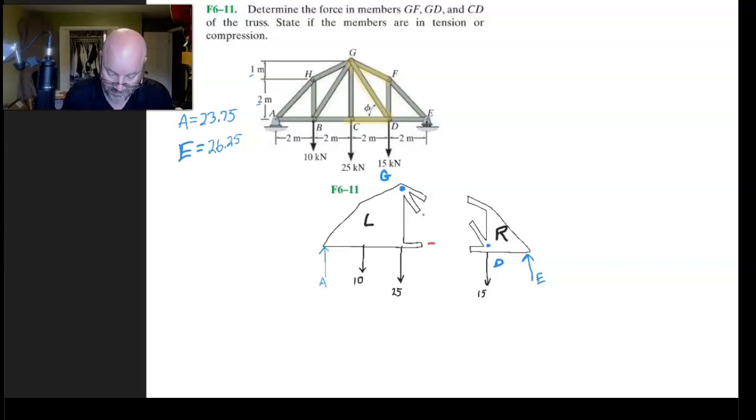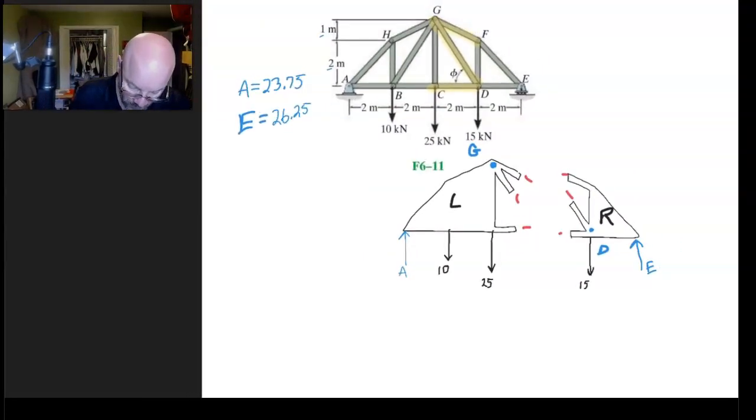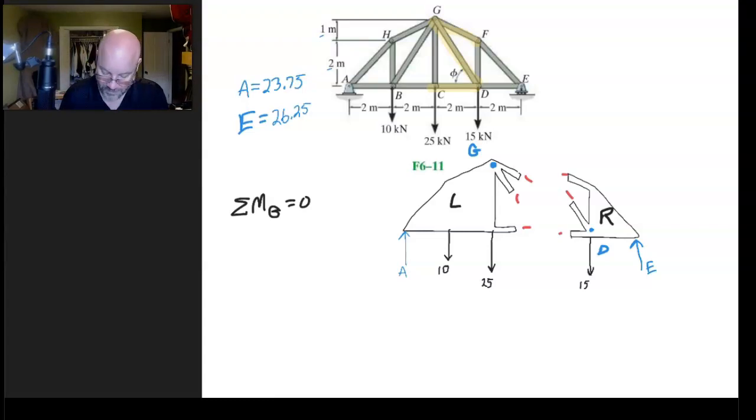Some things to look for, look for places like this up here at G and down here like this at D. Because I've got these internal forces here. And what we don't know is their magnitude and we don't know whether they're in compression or tension. I mean that's the point, that's what we're looking for. But for example, if you look at the left hand side at G, we could come in here and we could say let's look at the moment around G.